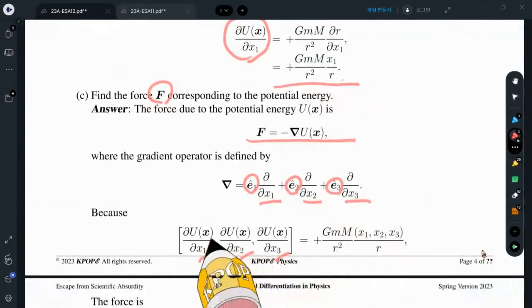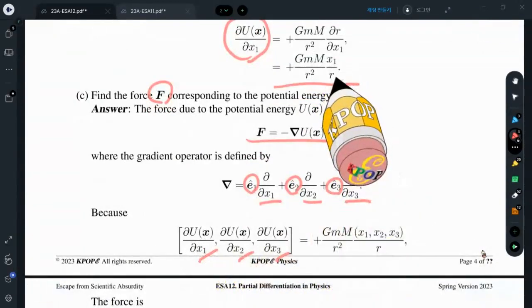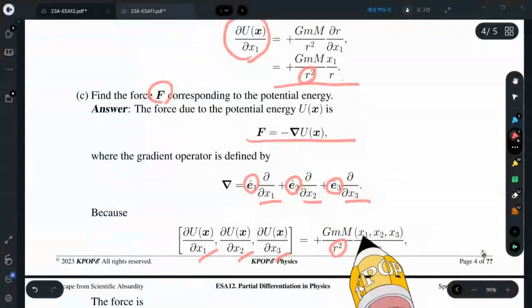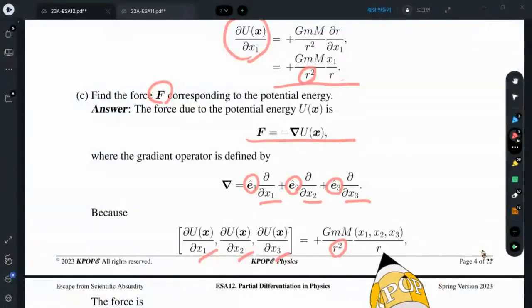They are x1 over r, x2 over r, x3 over r. We have pulled GmM over r squared out. And x1 over r, x2 over r, x3 over r.